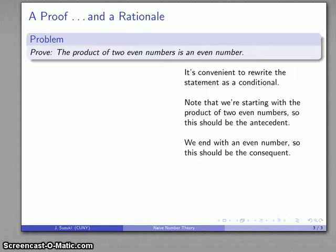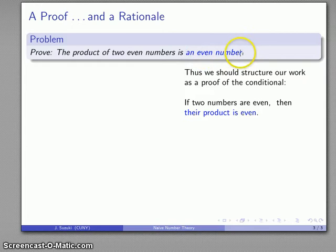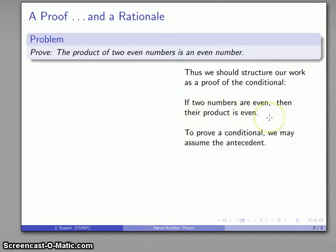This should be the thing that follows the then portion of the statement. Our conditional should be something like: if I have two numbers that are even, then their product is going to be an even number. The important thing is once I have a conditional statement to prove, in any proof of any conditional I can always assume we have the antecedent.